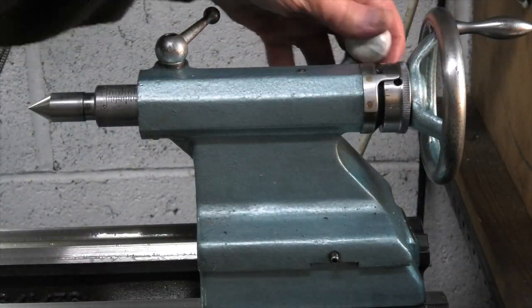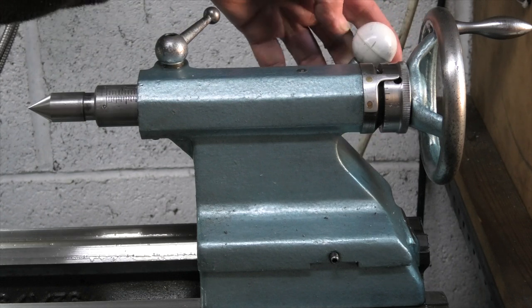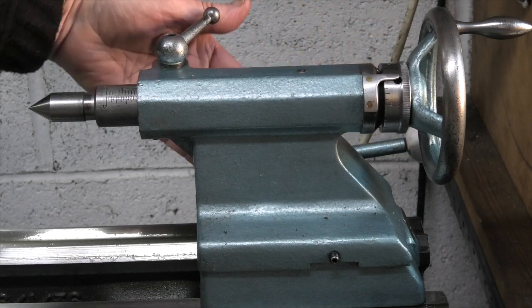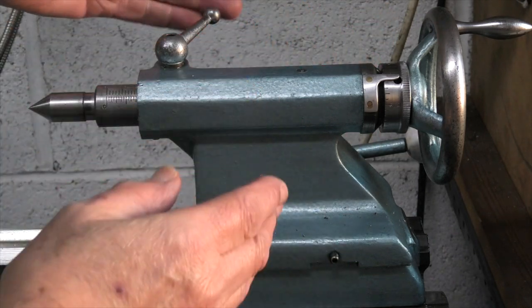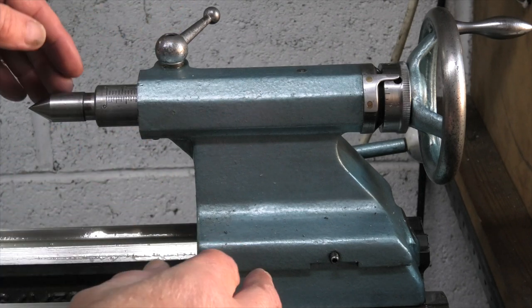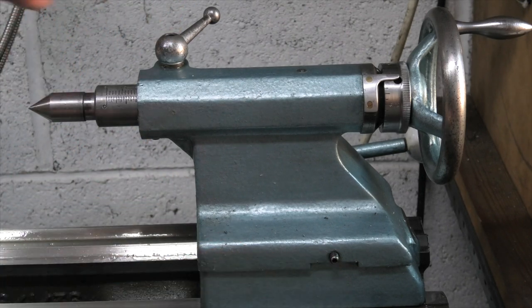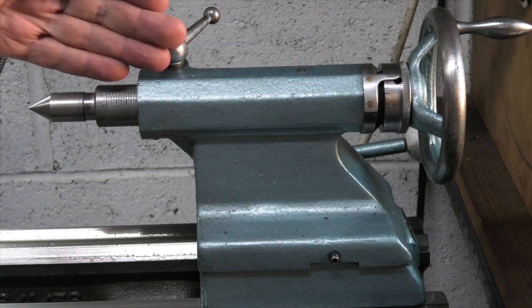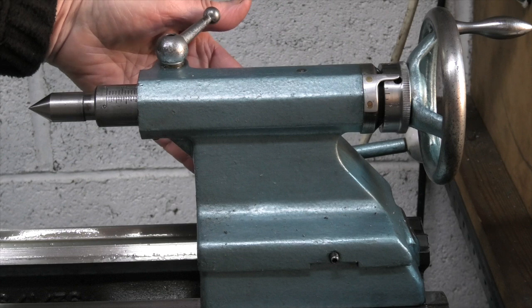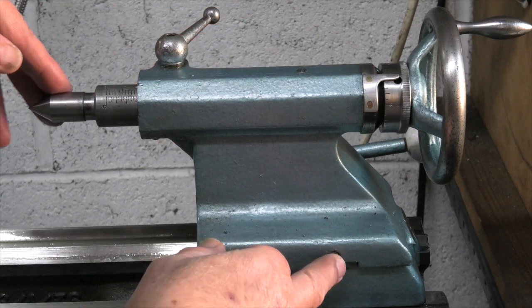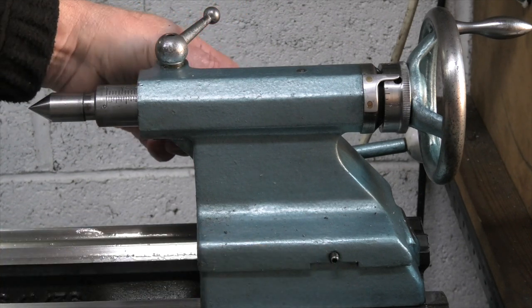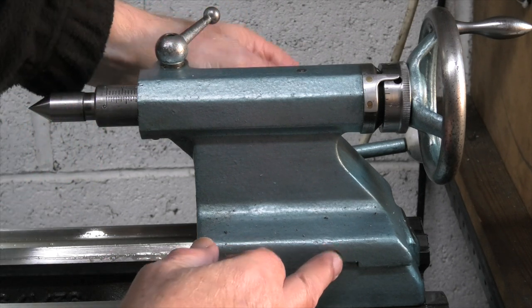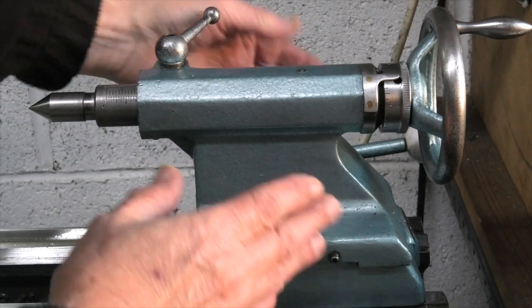But don't forget to take the clamp off, because if you have the clamp on it holds the tailstock in position. Take the clamp off, adjust the screws. If you want it away from you slacken this one off, tighten the back one up. If you want it towards you tighten this one up and slacken the back one off. And then once you have the position, just make sure that they are both tight so it can't move.